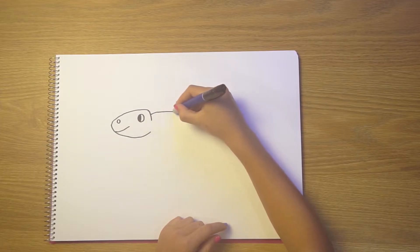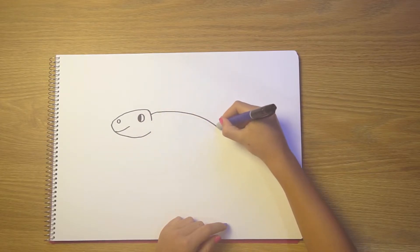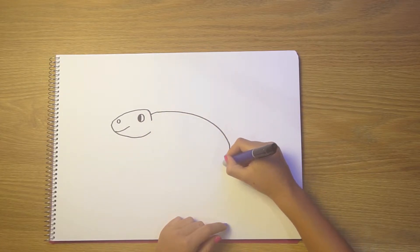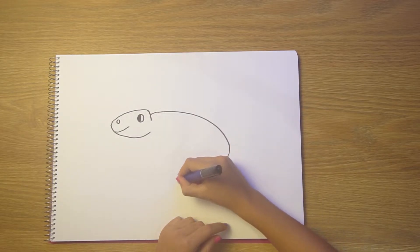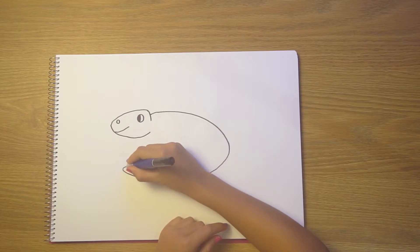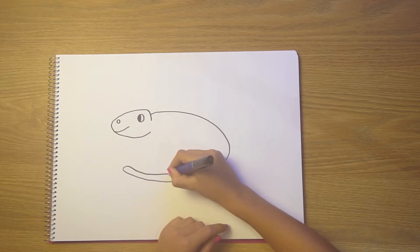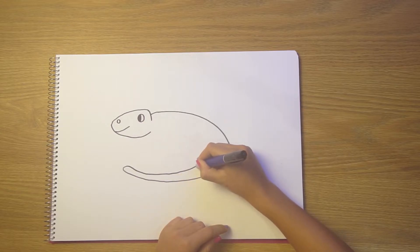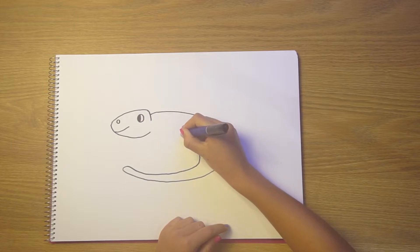Now let's draw all the way around in a big curve to make the back and the tail. Then all the way back again to fill in the body. There we go.